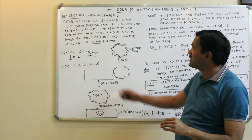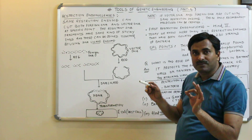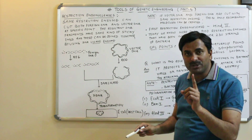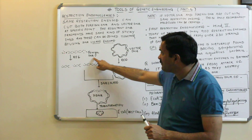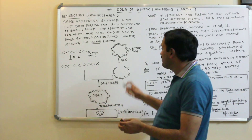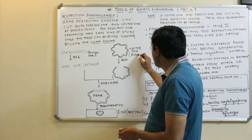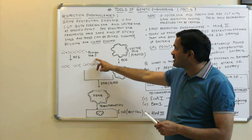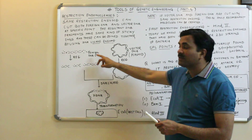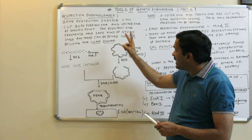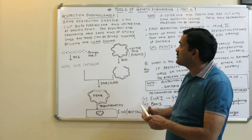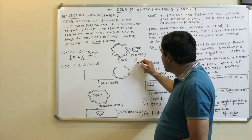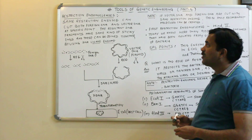The same restriction enzyme can cut both the foreign DNA and the vector DNA at a specific point. The most common vector is the plasmid vector. So we have the vector DNA and the foreign DNA, and the same restriction endonuclease enzyme — which we know as the molecular scissor — can cut both the vector DNA and the foreign DNA at specific locations.